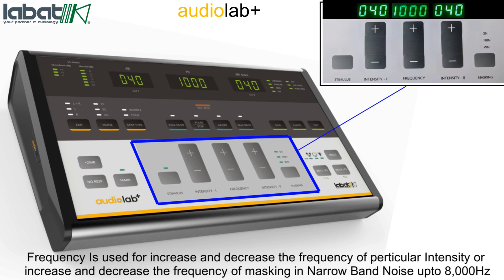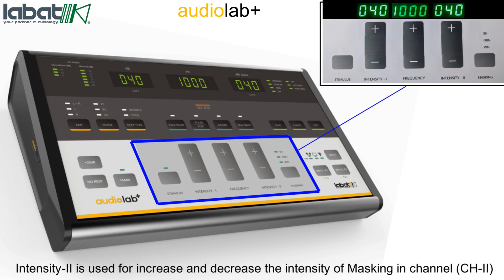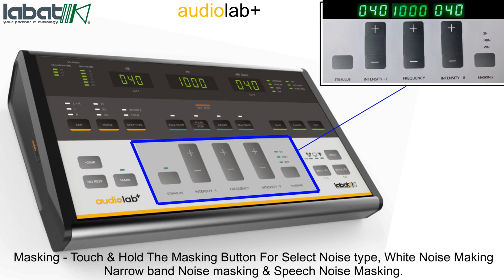Frequency also controls increase or decrease of masking frequency in narrow band noise up to 8000. Intensity 2 is used to increase and decrease the intensity of masking in channel 2. Touch and hold the masking button to select noise type: white noise masking, narrow band noise masking, or speech noise masking.